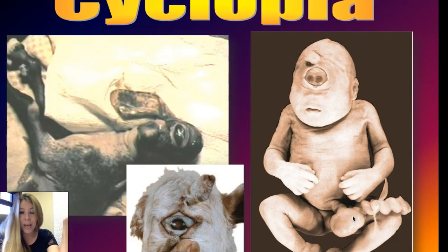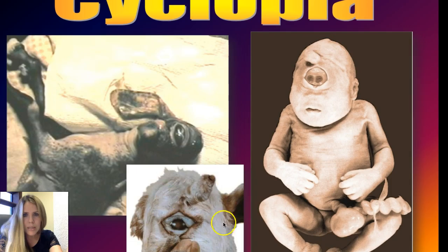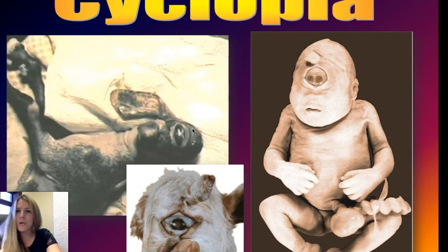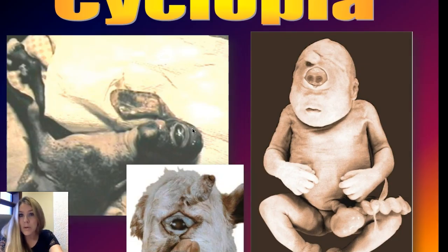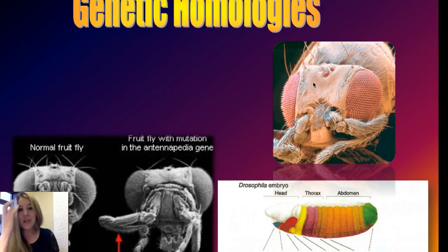Cyclopia also involves malformations of other parts of the face, and sometimes the organs are produced on the outside of the body. These individuals are generally stillborn or result in miscarriage. Cyclopia appears in humans, goats, cows, cats, and dogs — the same gene mutation, the same change in DNA, codes for the same disease in all these organisms. This is thought to be the origin of the cyclops myth, and it demonstrates lineage from a common ancestor.